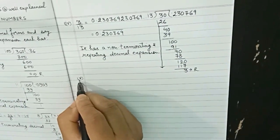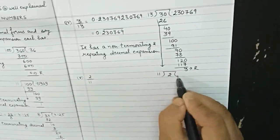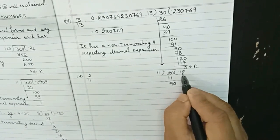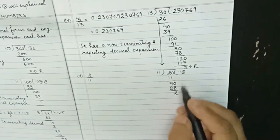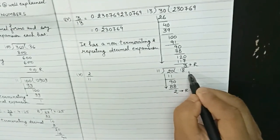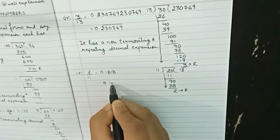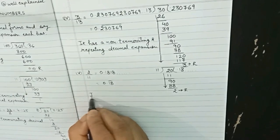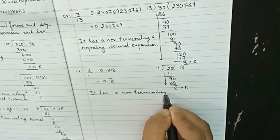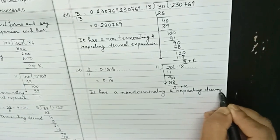Part five: 2 upon 11. Dividing 2 by 11, we get a decimal. We started with remainder 2 and the remainder 2 keeps repeating. So the decimal expansion is 0.181818..., written as 0.1̄8̄. It has a non-terminating and repeating decimal expansion.